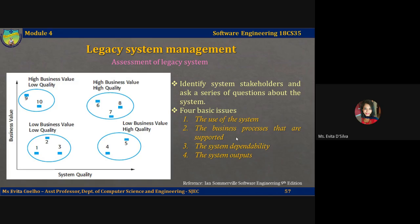Second, the business processes that are supported. When a system is introduced, business processes are designed to exploit the system's capabilities. If the system is inflexible, changing the business processes may be impossible. Third, the system dependability. Dependability is not only a technical problem but also a business problem. If the system is not dependable and the problems directly affect business customers, or mean that people in the business are diverted from other tasks to solve these problems, the system has a low business value.